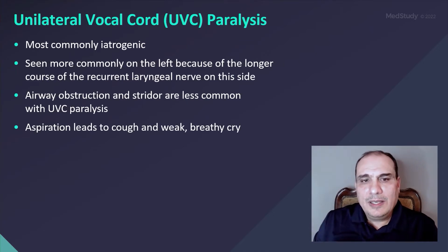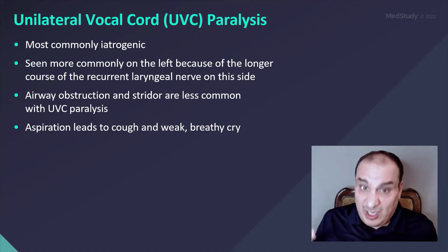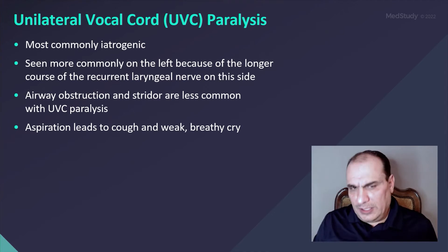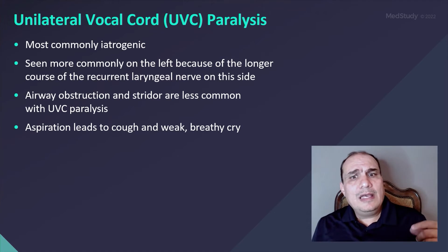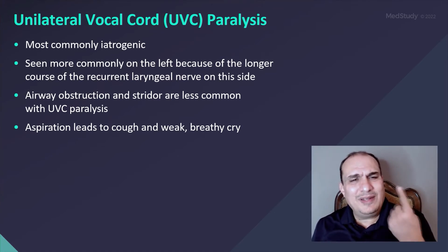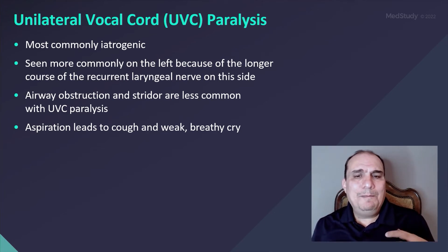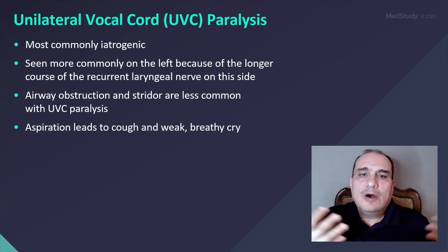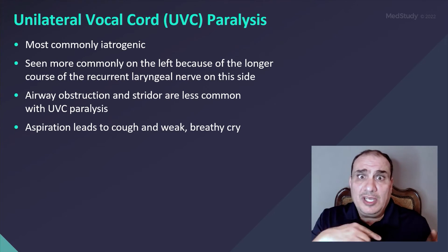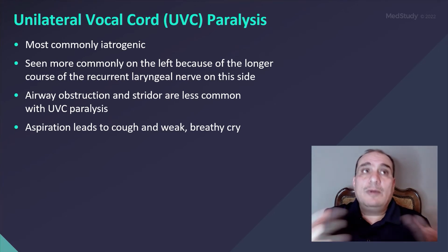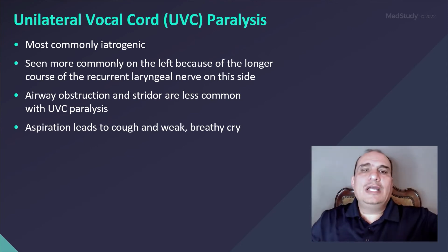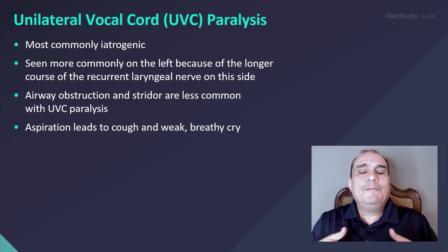Unilateral vocal cord paralysis is most commonly iatrogenic — we cause it — and it is seen more commonly on the left due to the longer course of the recurrent laryngeal nerve on that side. Because only one vocal cord is affected, stridor will be mild and airway obstruction is less severe. If the history mentions surgery on the left side of the chest, such as PDA ligation or cardiac surgery, the most likely diagnosis is left vocal cord paralysis.